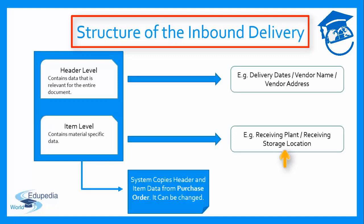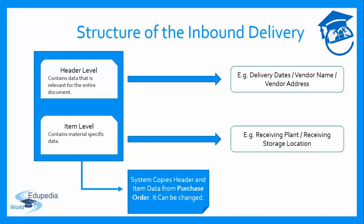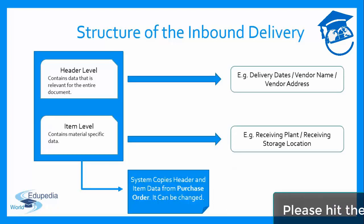One material may be received into one plant and the next material can have a totally different receiving plant and storage location. At item level, the data is only relevant to that unique material and may differ from the next. This material-specific item level data is usually copied from the purchase order as default values, but these can always be changed or modified to suit the particular transaction.